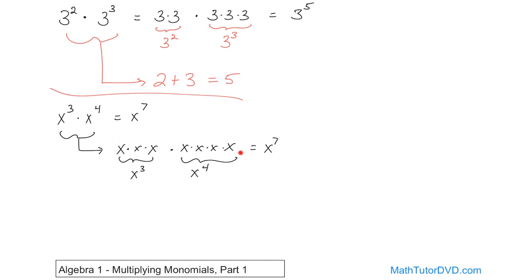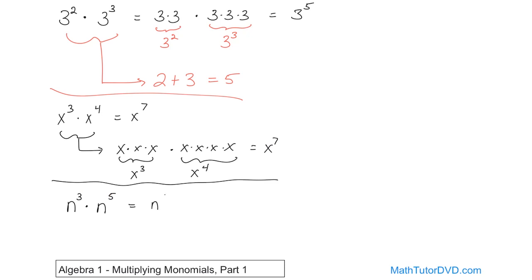I'm just writing this out the first few times to give you a visual aid to understand why it is the way it is. But really, you never have to do that when you're solving problems — you just need to make sure the base is the same and then add the exponents. For instance, if you had n to the power of 3 multiplied by n to the power of 5, you first check that the bases are the same — n is the same as n — and then add the exponents, giving you n raised to the power of 8.